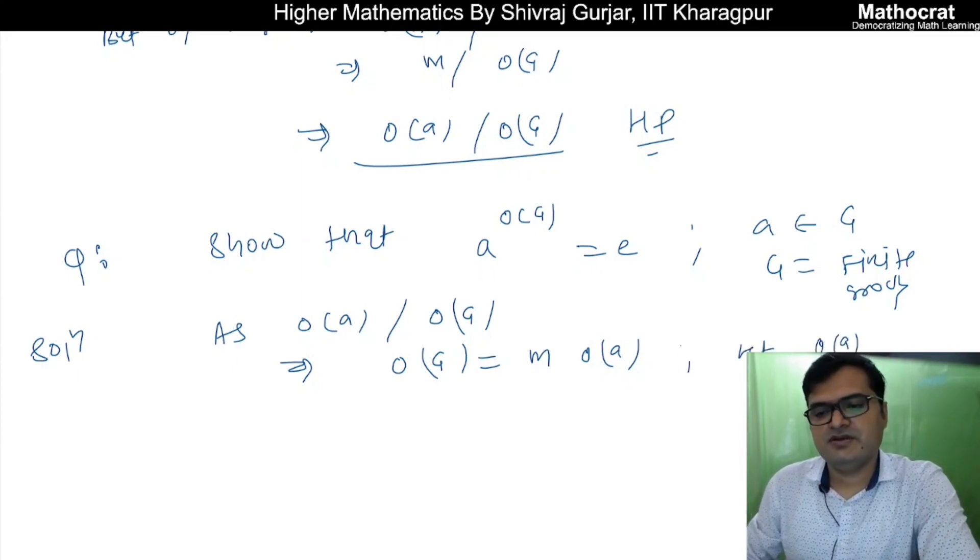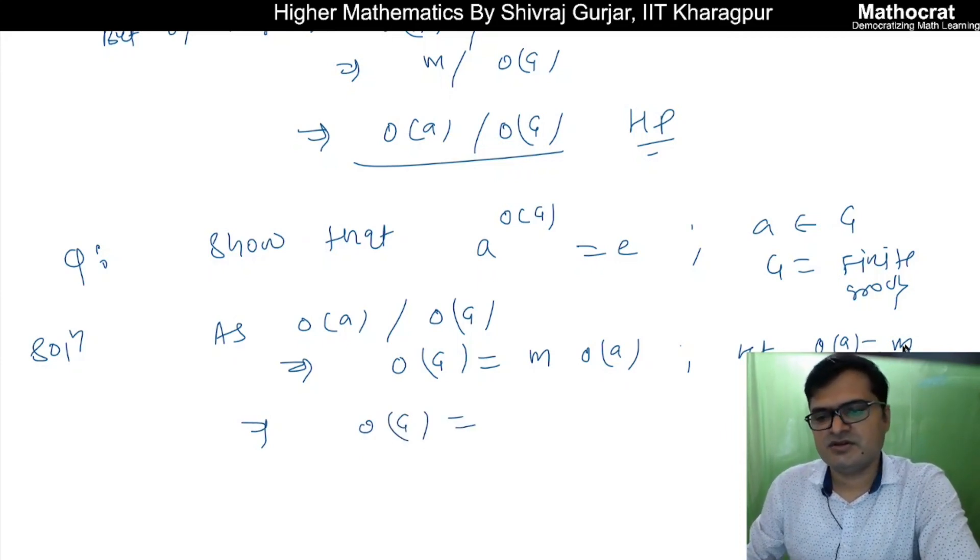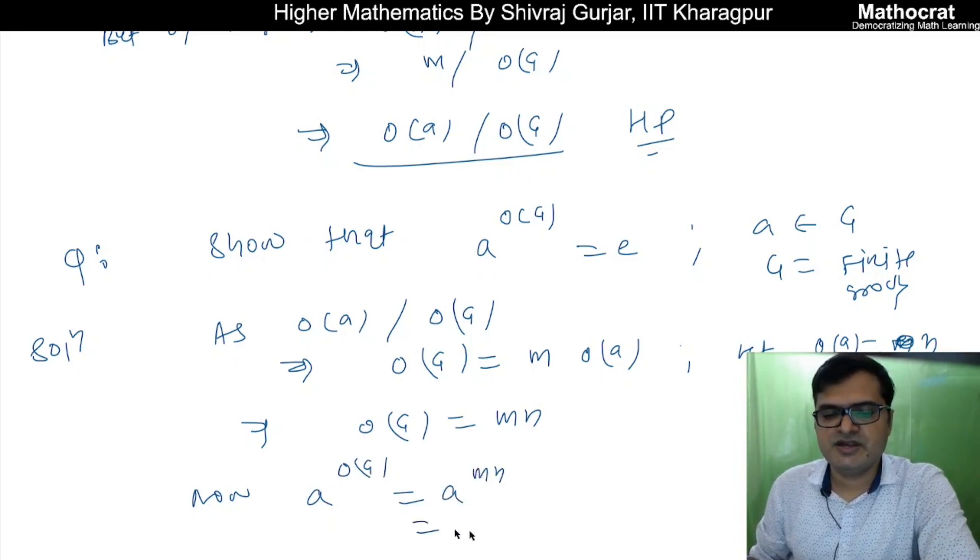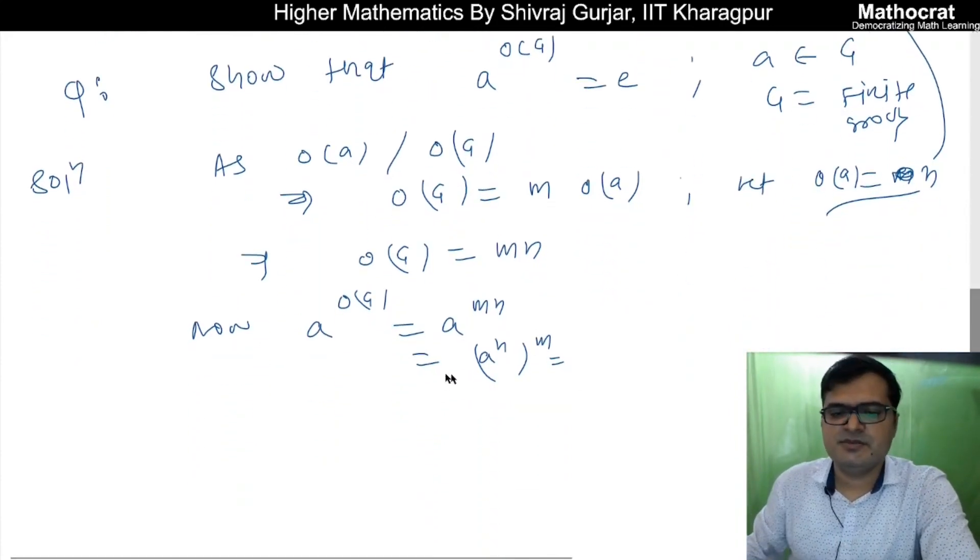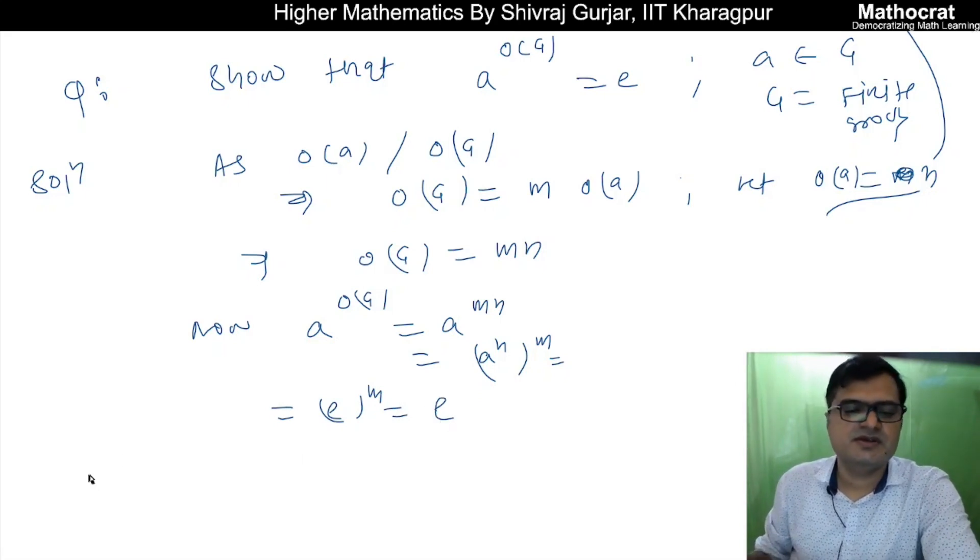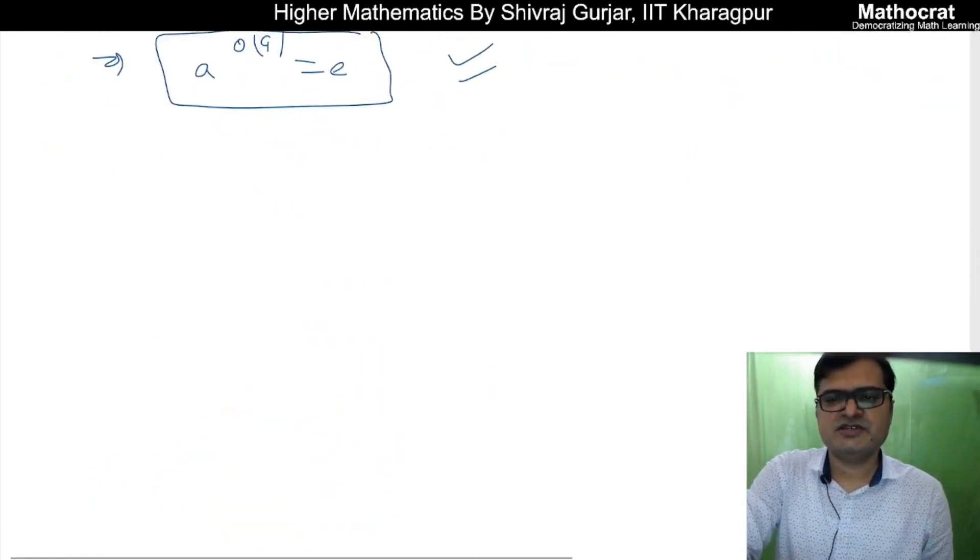Let order of a is equal to m. So order of G is equal to mn for some integer n. Now a^(order of G) equals a^(mn), which we can write as (a^m)^n. But order of a is m, that means a^m is e. So this becomes e^n, which equals e. Thus a^(order of G) is nothing but e.